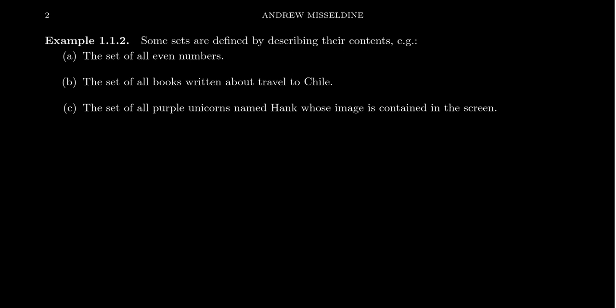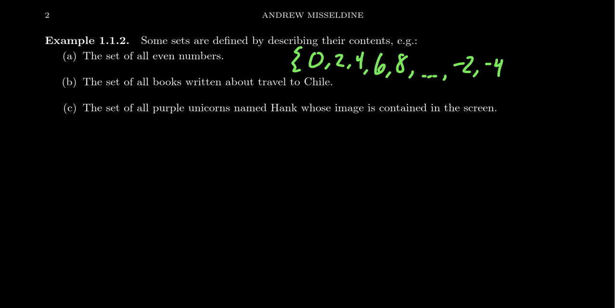Let me give some examples of sets. One set we might talk about in Math 3120 is the set of all even numbers. This set includes things like 0, 2, 4, 6, 8, but also negative numbers like negative 2, negative 4, negative 6, etc. We often start and end a set with curly braces to indicate that the things between the braces are the elements. For the set of even numbers, there are infinitely many elements, so we use ellipses — dot, dot, dot — to indicate there's a pattern established that continues.